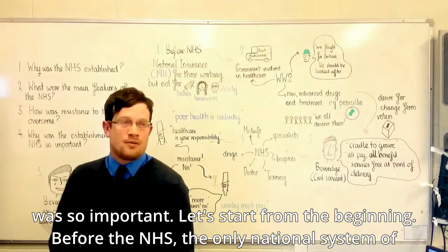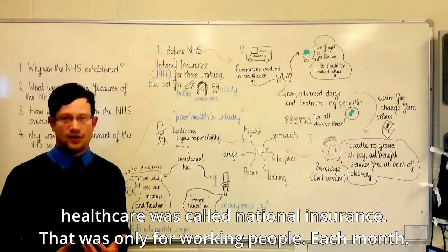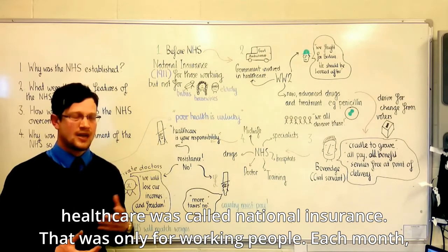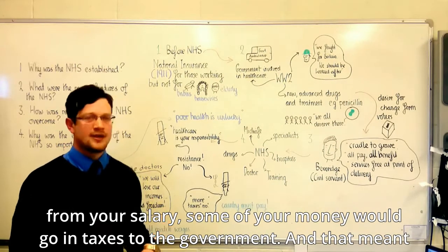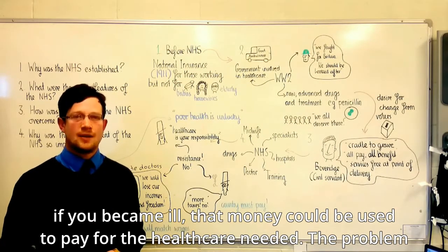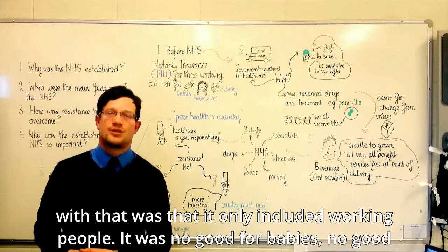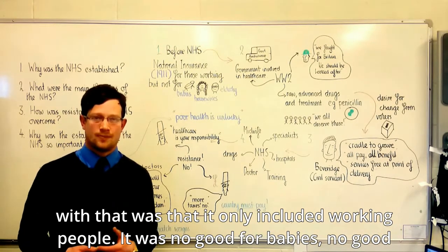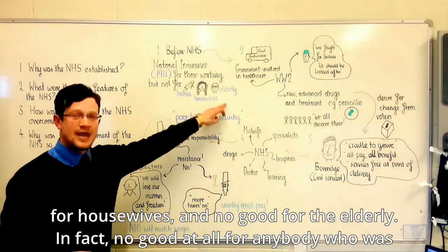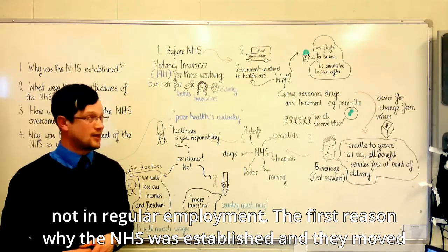Before the NHS, the only national system of healthcare was called national insurance. That was only for working people. Each month, some of your salary would go as tax to the government, and if you became ill, that money could be used to pay for the healthcare you needed. The problem was it only included working people — no good for babies, no good for housewives, and no good for the elderly. No good at all for anybody who was not in regular employment.